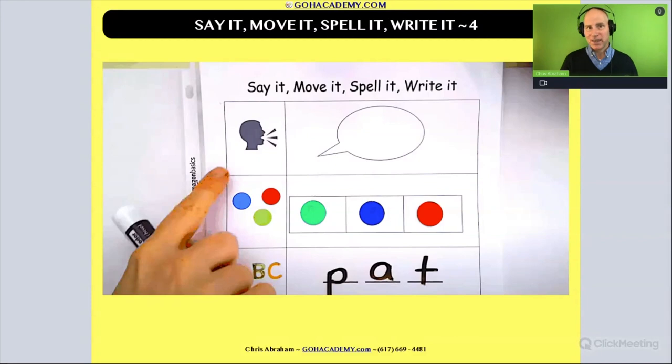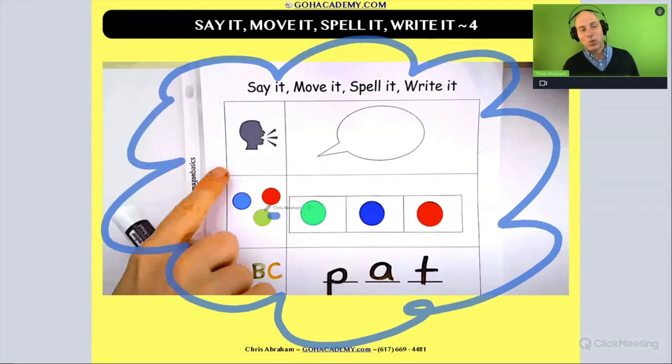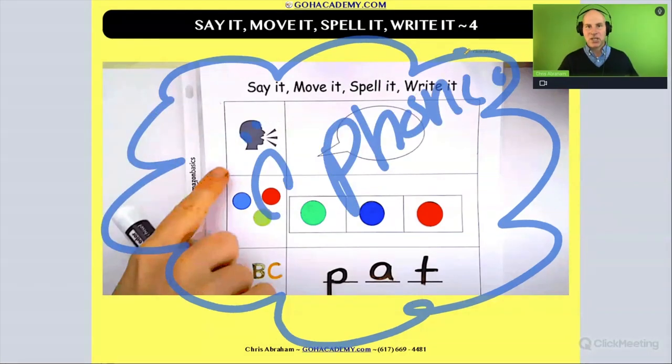And this is going to be an activity if you ever saw a student and they had a weakness in phonics, if phonics was their weakness and you're writing your essays, right? You're writing your essays. And you notice the student is having difficulty with phonics, with letter sound correspondence, say it, move it, spell it, write it. It's a great activity to practice letter sound correspondence.